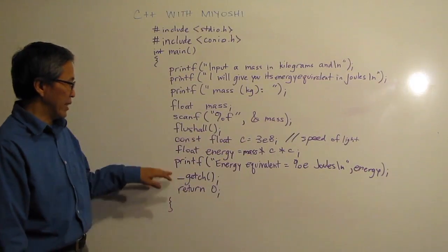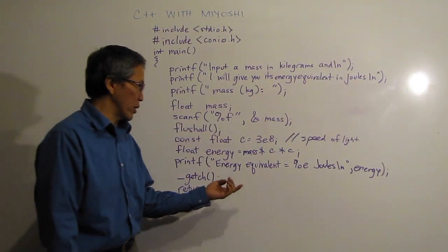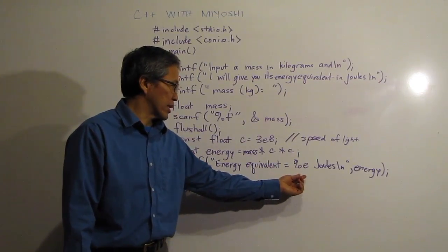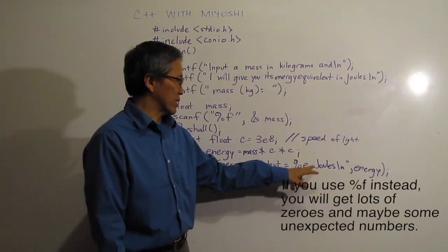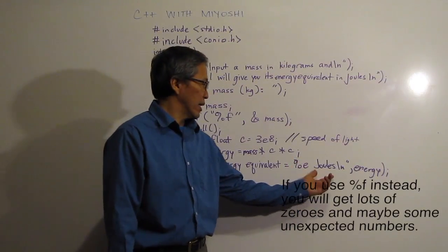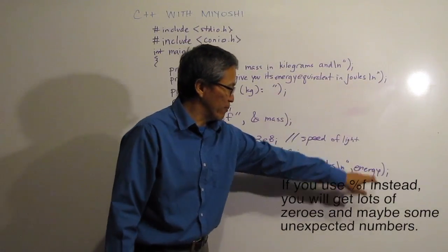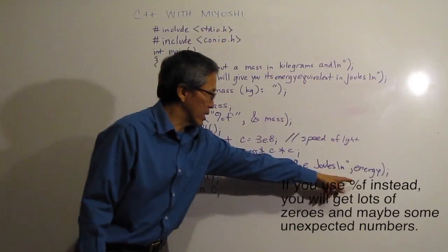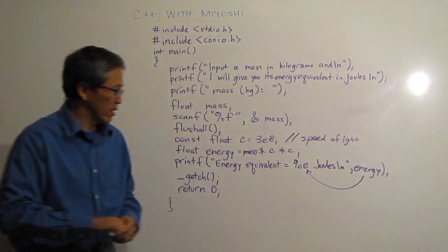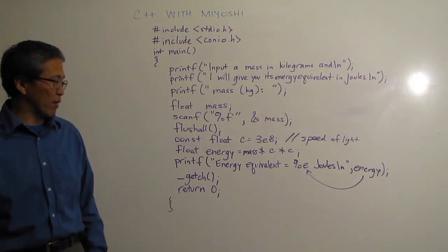And then this printf, I like to label my output always so here I have energy equivalent equals percent E. And that just remember that's just going to give me my output in scientific notation and then I have joules backslash n to give me a new line. And then I have a comma energy because the energy again is going to go out there. So whatever the calculation is, it's going to go output there in my line of output.